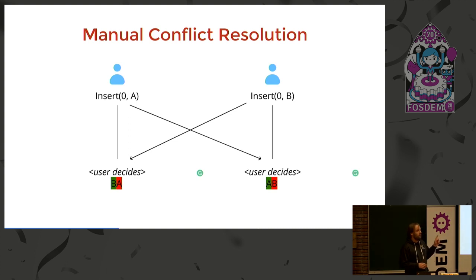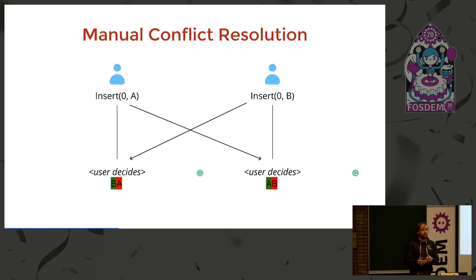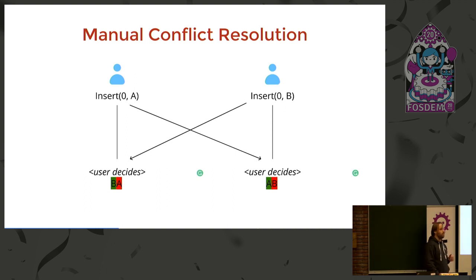This is also a problem that YJS solves. Think about offline editing — you have a collaborative application that is supposed to also work offline. You want to be on a plane, write a document, and then later sync those changes to the other peers. Then you want to have manual conflict resolution, and YJS is also a tool for you to do that.